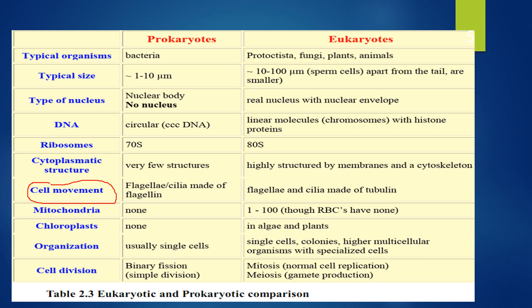Prokaryotes have nucleoid regions. Chloroplasts are found in green plants and are called chloroplasts. Organizations are usually from single cells — single cells, colonies, or higher multicellular organisms with specialized cells. Cell division in Prokaryotes is by binary fission, which is a simple asexual reproduction by dividing into two.